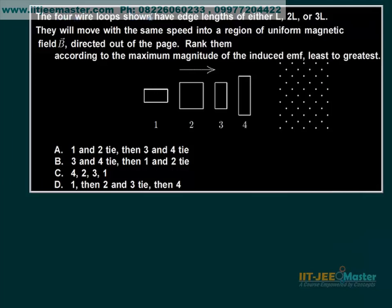The four wire loops shown have edge lengths of either L, 2L, or 3L. This will be L, then this will be 2L obviously. This will be 2L, this will be 2L. This will be L. This will be 2L and this is L and this is 3L.